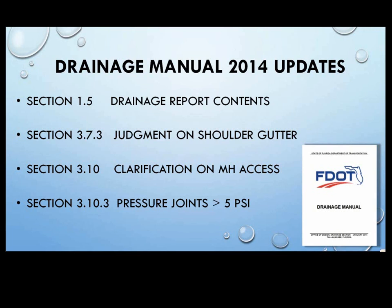We clarified the section on manhole access. It was written to suggest that a 90-degree intersection required a manhole. We all know that any time there's a bend — horizontal or vertical — where debris could hang up, or a pipe size changes, we always want to be able to get in there and get any snagged debris out. This was added because we got some pushback from somebody who wanted to cut a corner. As hydraulic designers, we need a maintainable system and we need access when we have bends.